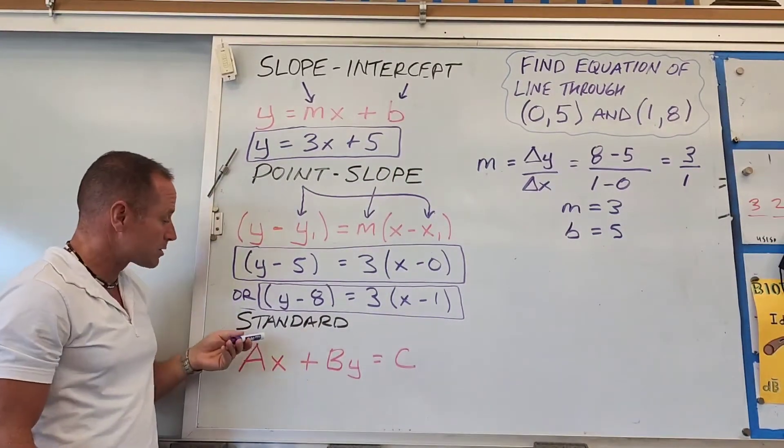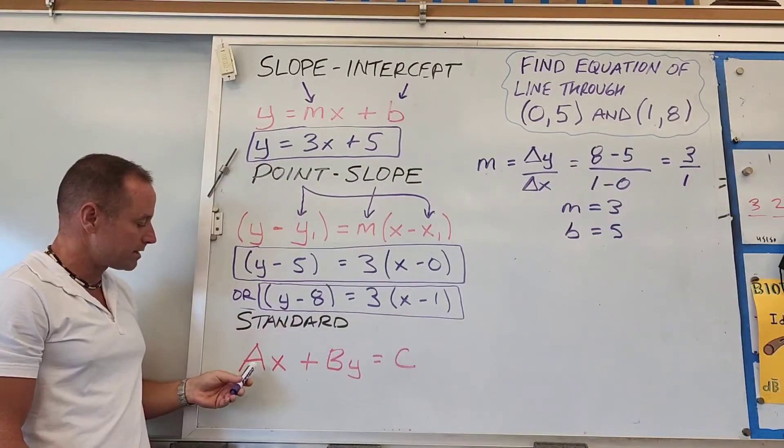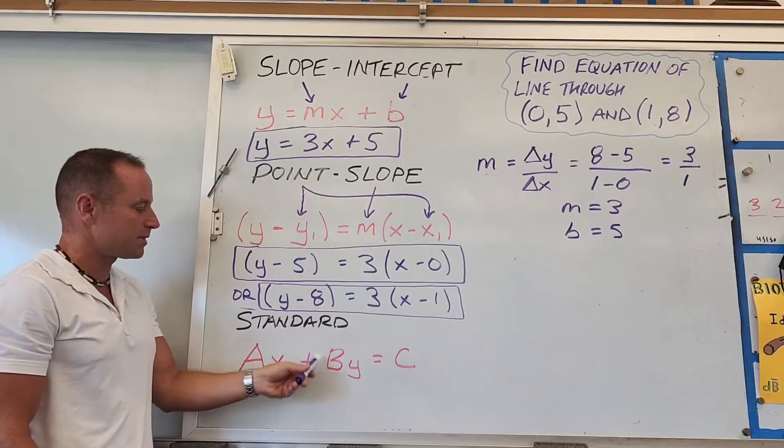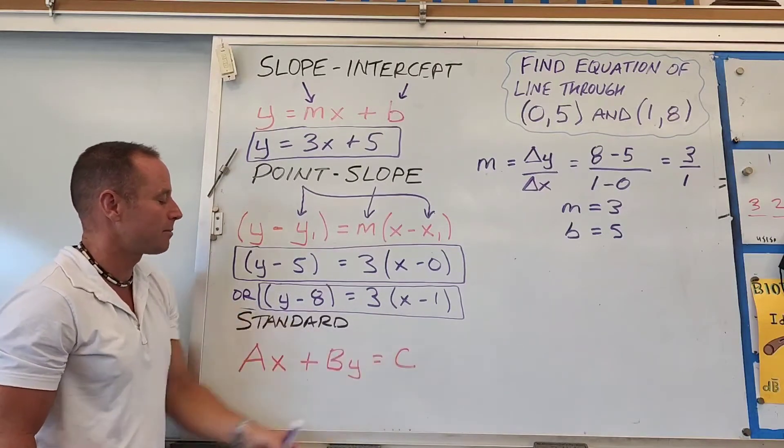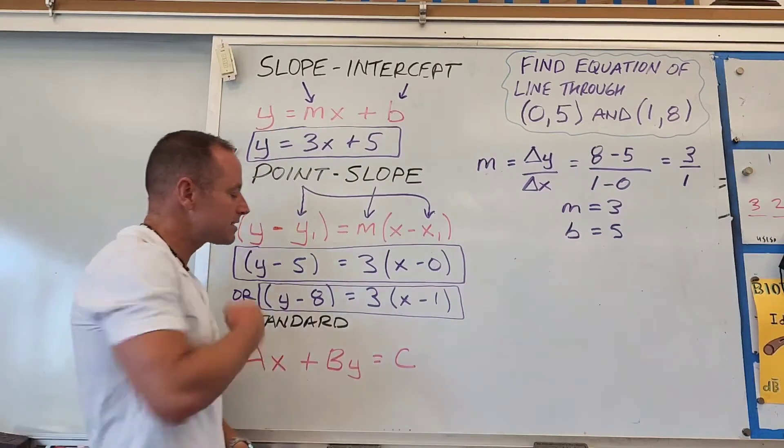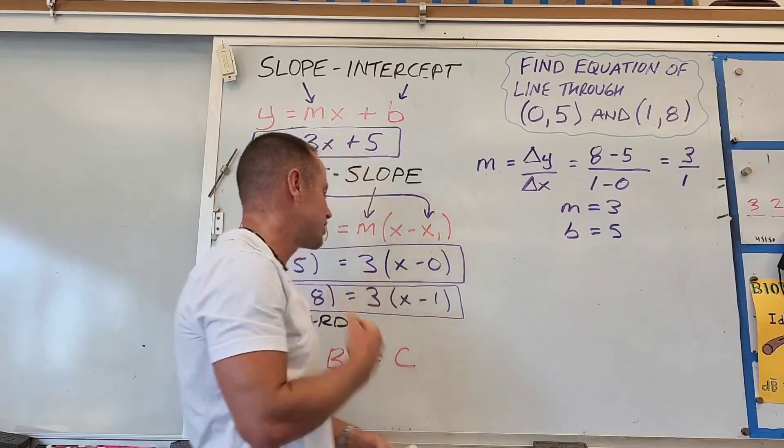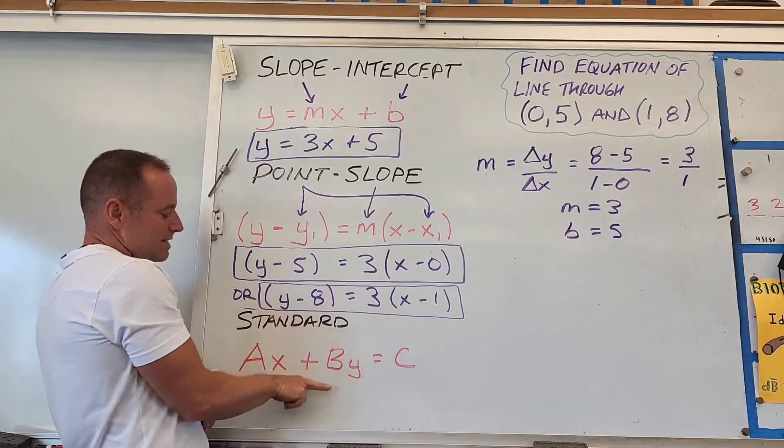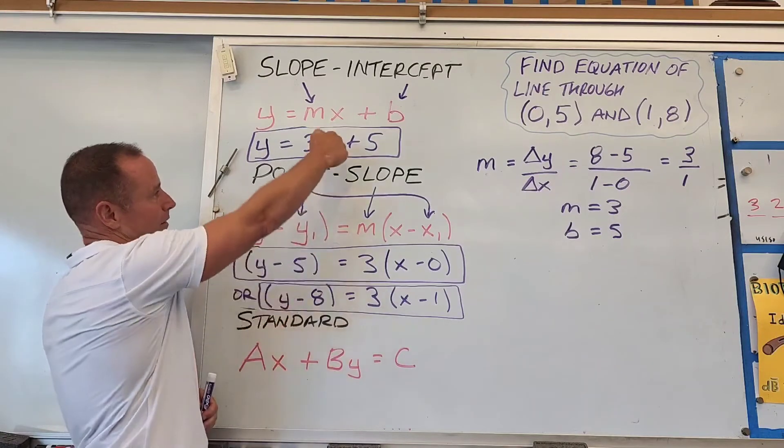is called standard form, which looks like Ax plus By equals C. A, B, and C are constants, and you try to set it up so they aren't fractions. It's pretty easy to get it into this shape.